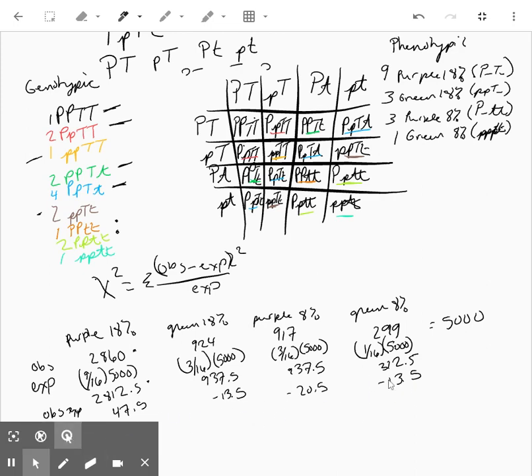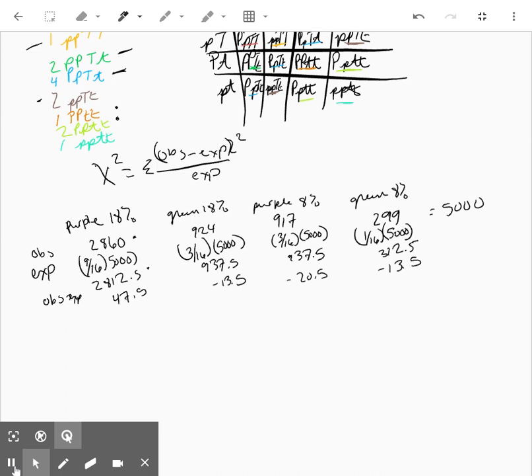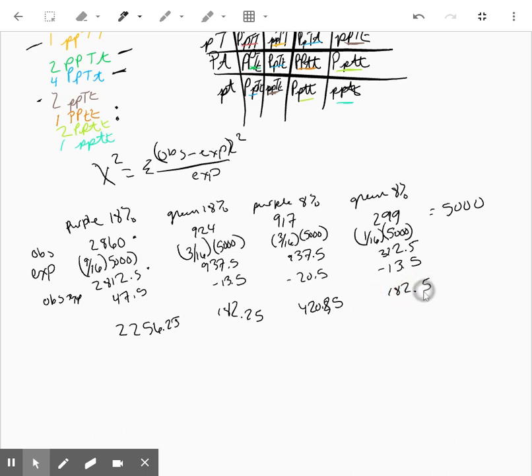Then we're going to square those values. So when you square each of those, you should then get 2256, 182, 420, and 182.